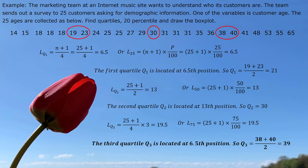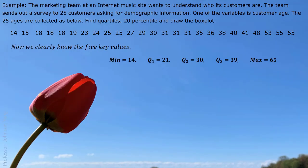With knowing three quartiles and the minimum value and the maximum value, we have five key values. So, with these five key values, we can draw the box plot. We draw the line first.